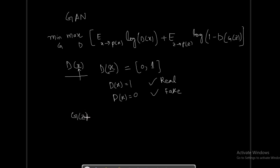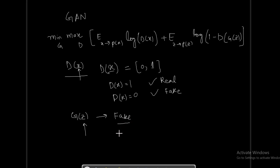The generator function G(z) takes z — a random noise sample — as input, and it will try to output an image that is fake in reality. But our job and purpose is to fool the discriminator.